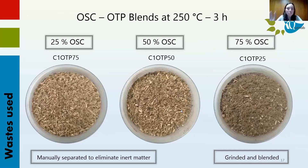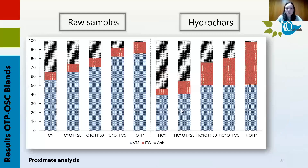Bearing in mind all the obtained results, it's time to talk about the other experiments carried out using HTC. Off-specification compost was manually separated to eliminate as much inert matter as possible, then it was ground and blended with olive pruning at different proportions: 25, 50, and 75 percent. HTC was then conducted at 250 degrees and three hours based on our previous experiments.